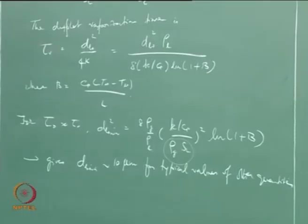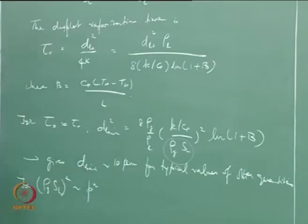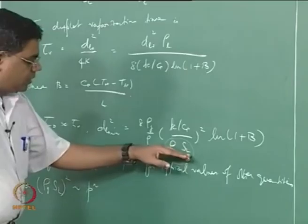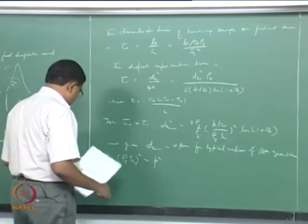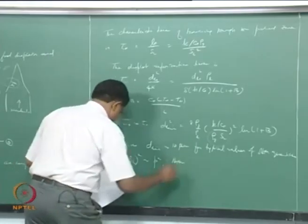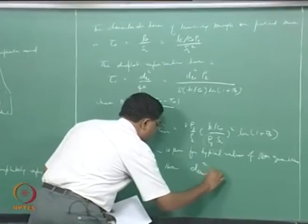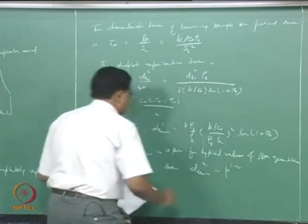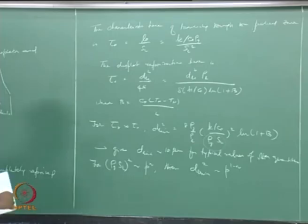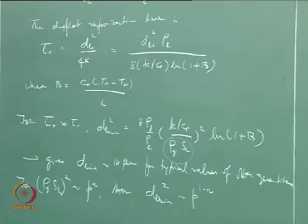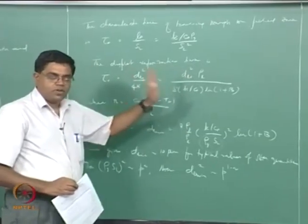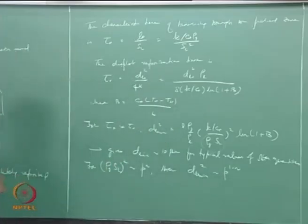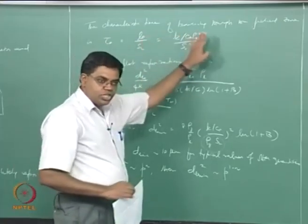We can also see the pressure dependency. For rho_g * S_L^2 going as p^n — from how burning velocity depends on pressure — d_L0_min^2 goes as p^(1-n). This pressure dependence purely comes from the preheat zone length; we do not need to worry about the pressure dependence of the evaporation time. The evaporation time is not dependent on pressure — it is only the preheat zone length that changes with pressure, which changes the residence time of the droplet within the preheat zone.